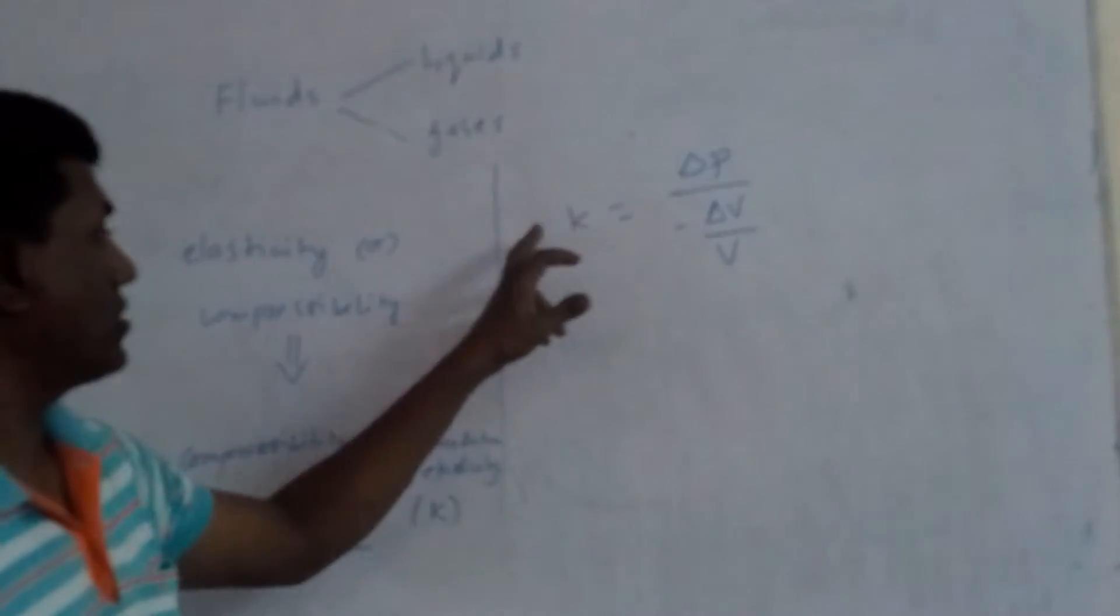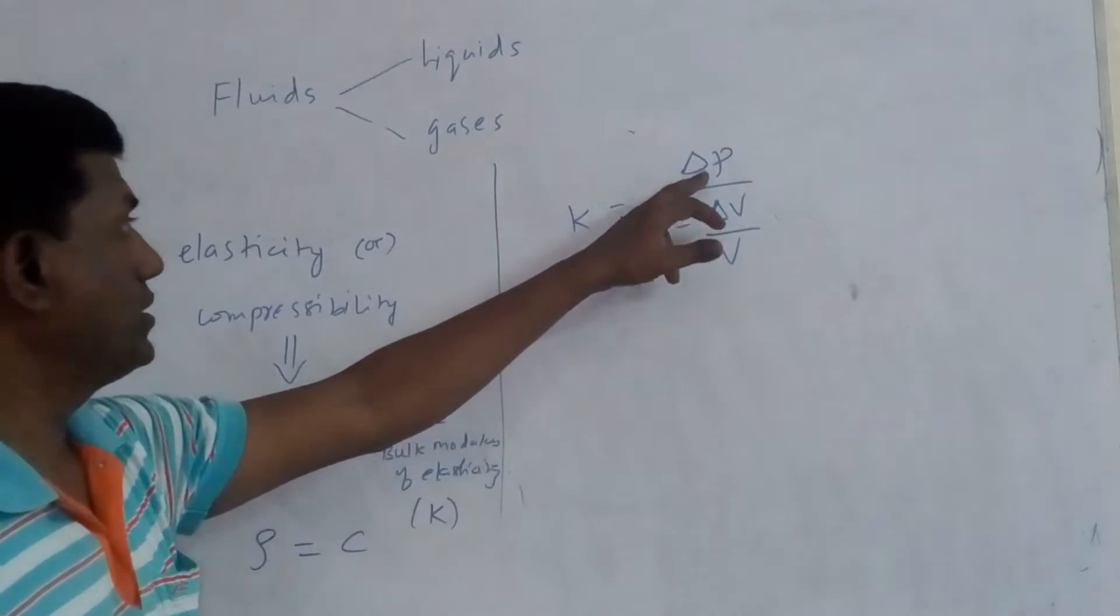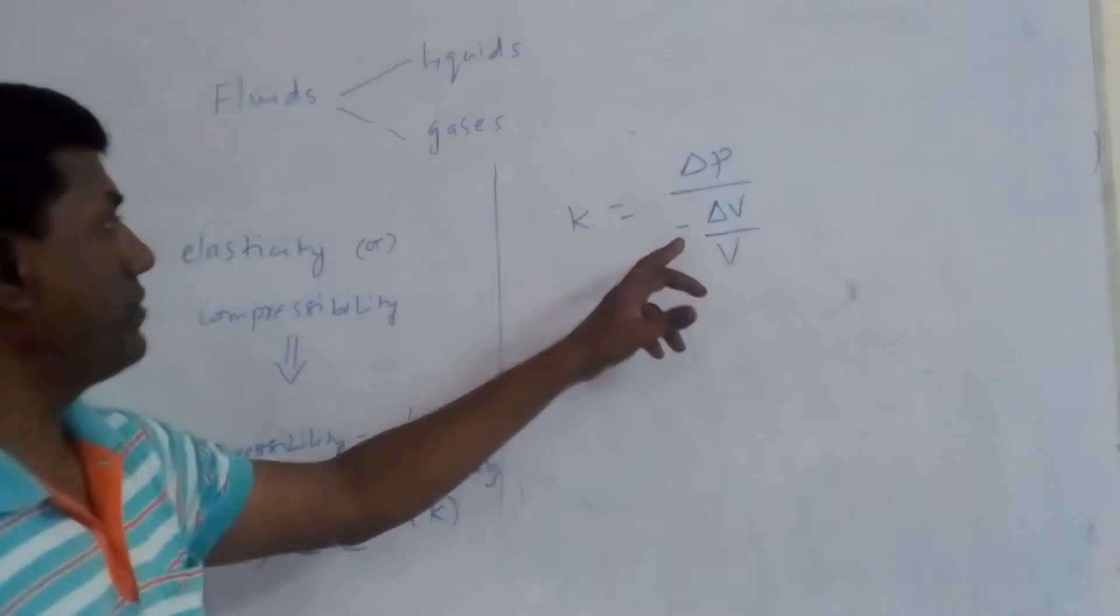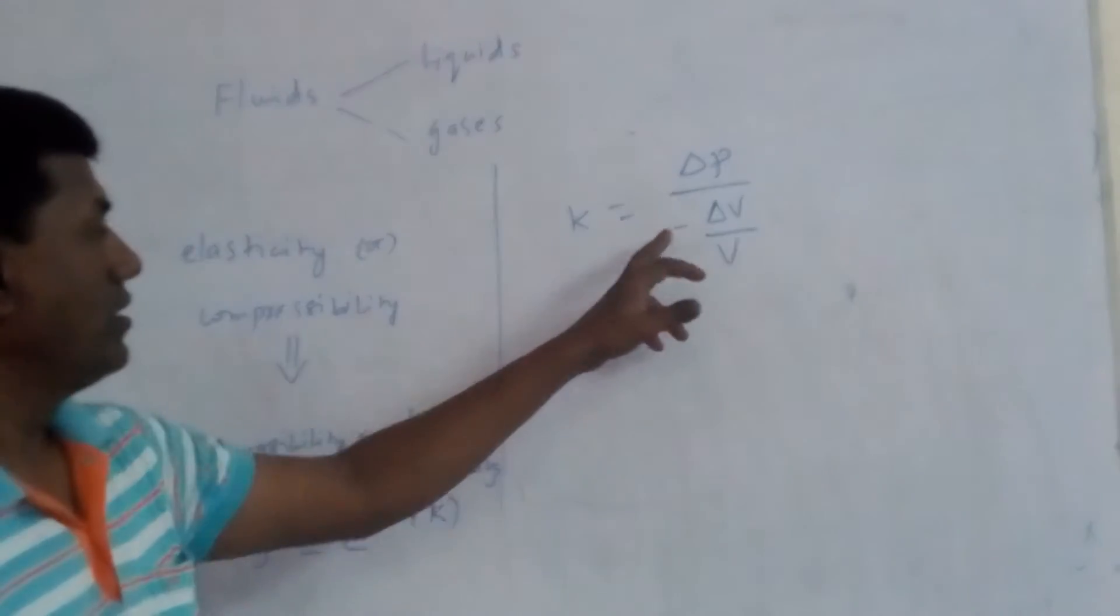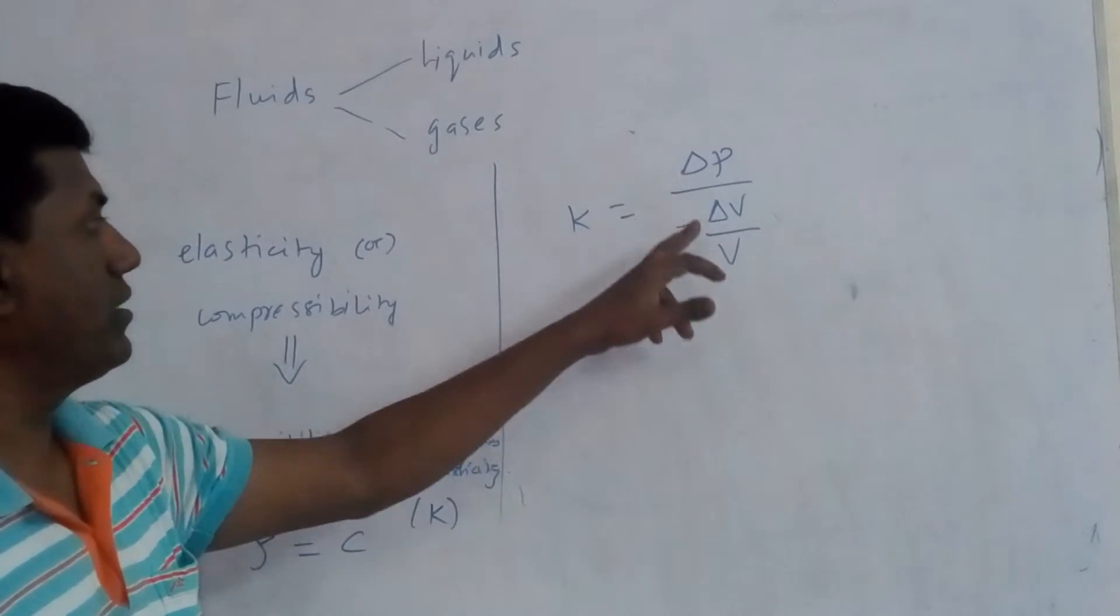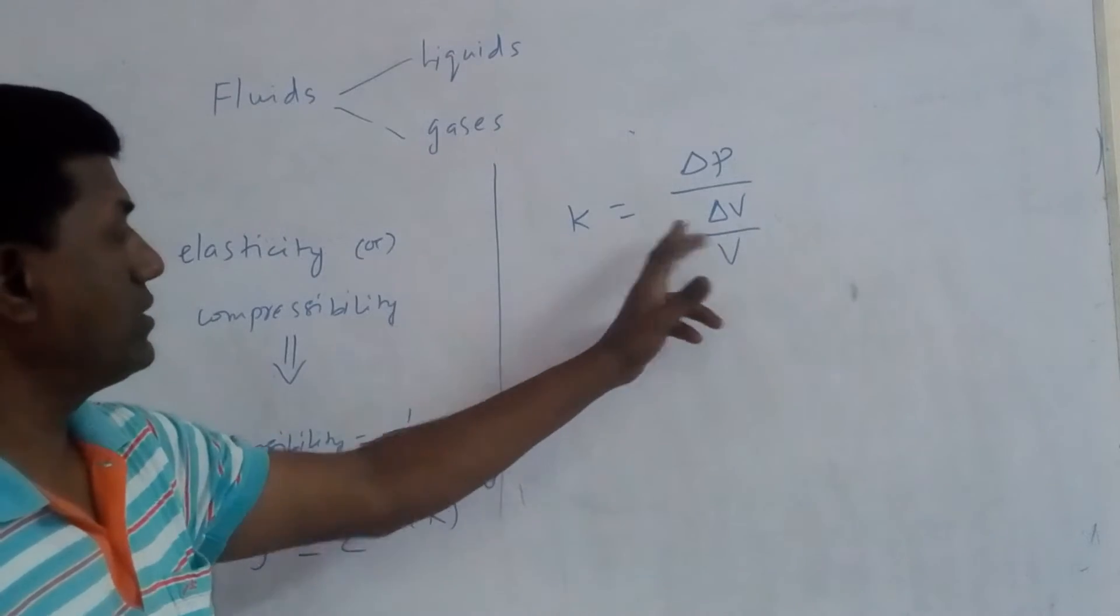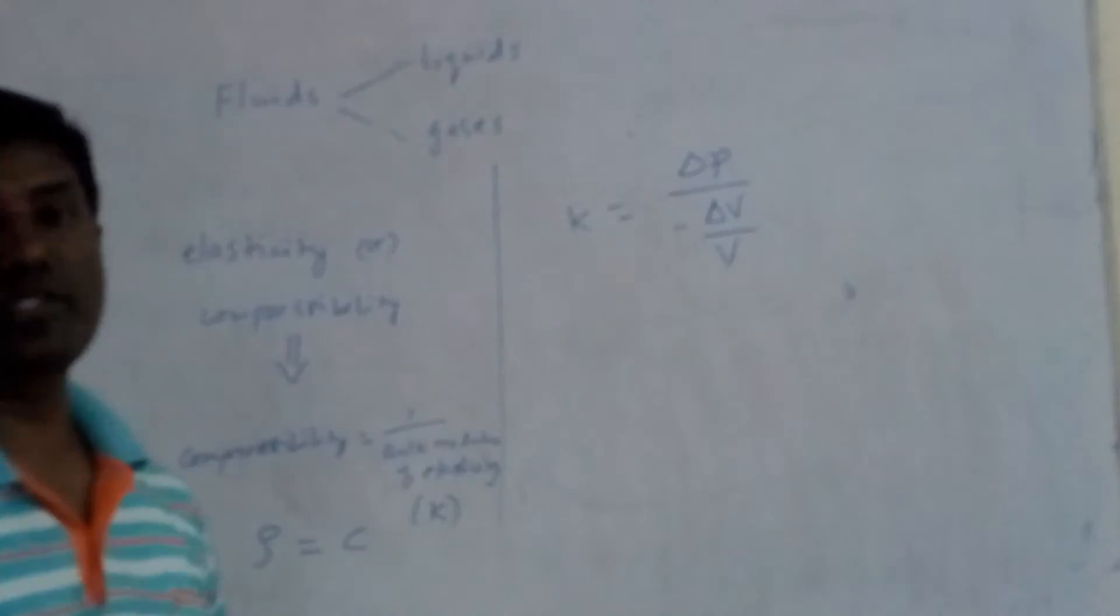Whereas the bulk modulus of the elasticity is defined as the change in pressure divided by volumetric strain. So the negative sign is as there is a decrease in volume then there is an increase in pressure.